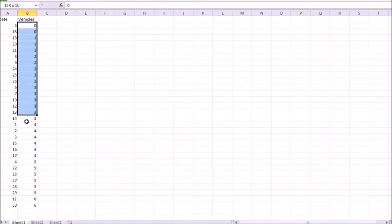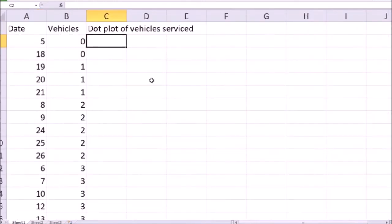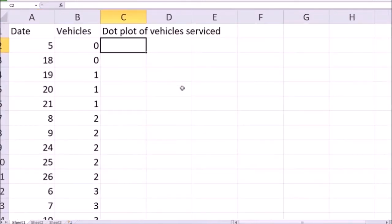Next, I want to count how many times each of these numbers is represented. For that, I'm going to use a COUNTIF formula. And to make things easy, to automate the naming of the chart, I'm just going to give it a name dot plot of vehicles serviced.